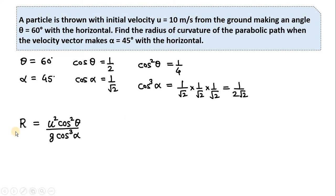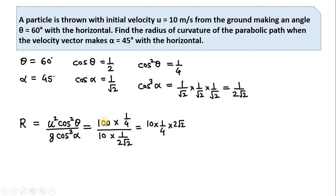Writing the formula and substituting: u squared is 100, cos squared theta is 1/4, g is 10, and cos cubed alpha is 1 over 2 root 2. So r equals 100 times (1/4) divided by 10 times (1 over 2 root 2). Simplifying: 100 divided by 10 gives 10, times 1/4 gives 10/4, and dividing by (1 over 2 root 2) brings 2 root 2 to the numerator, giving the final answer of 5 root 2 meters.